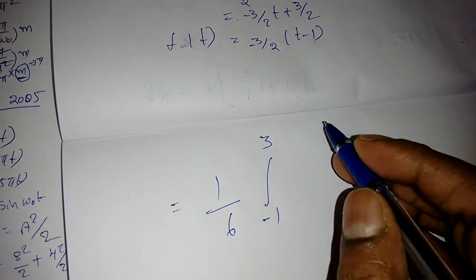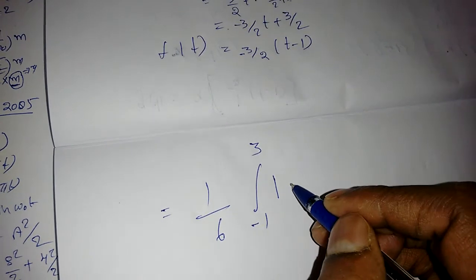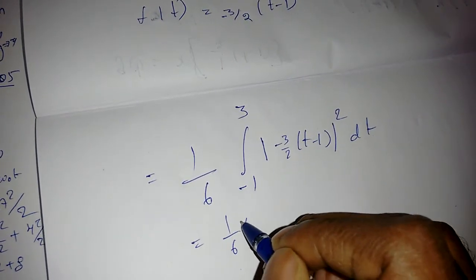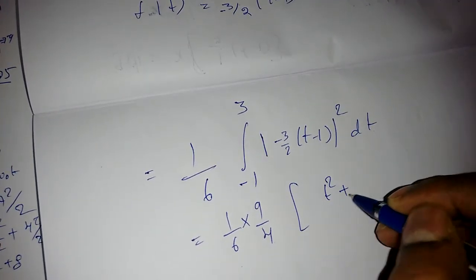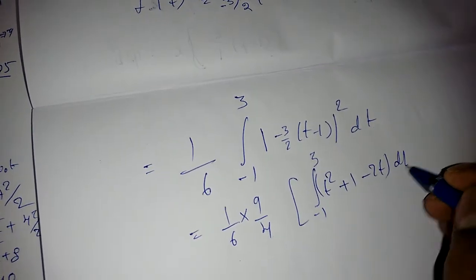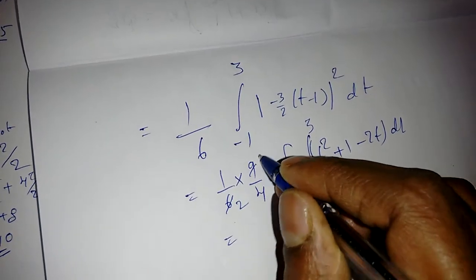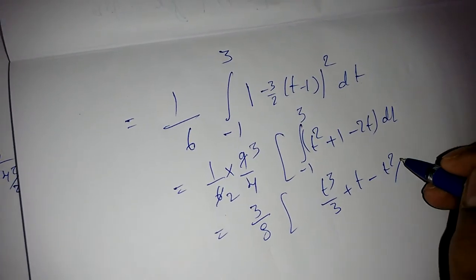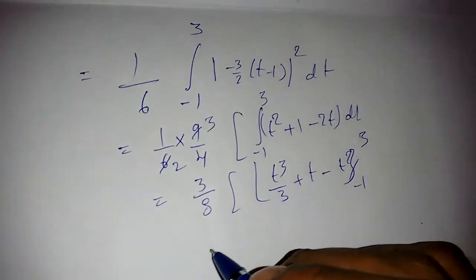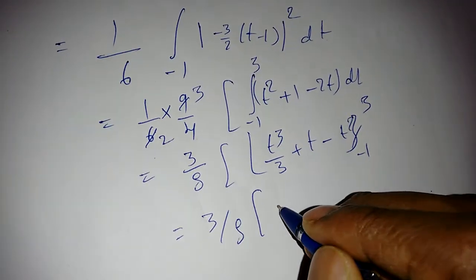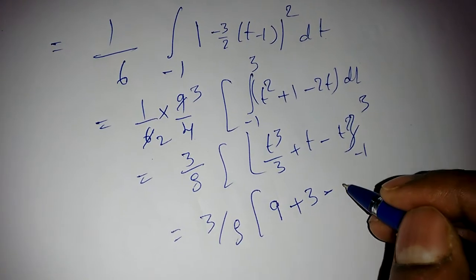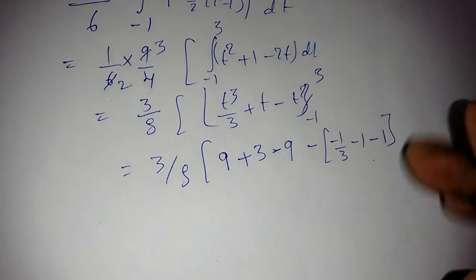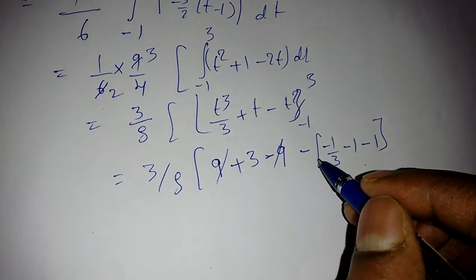The average power is (1/6) integral from minus 1 to 3 of |minus 3/2 times (t minus 1)|^2 dt. Taking (minus 3/2)^2 = 9/4 out: (1/6) times (9/4) = 3/8. We integrate (t minus 1)^2 = t^2 minus 2t plus 1 from minus 1 to 3. This gives (3/8) times [t^3/3 plus t minus t^2] evaluated from minus 1 to 3: substituting t=3 gives 9 plus 3 minus 9, and t=minus 1 gives minus 1/3 minus 1 minus 1, and combining these terms.